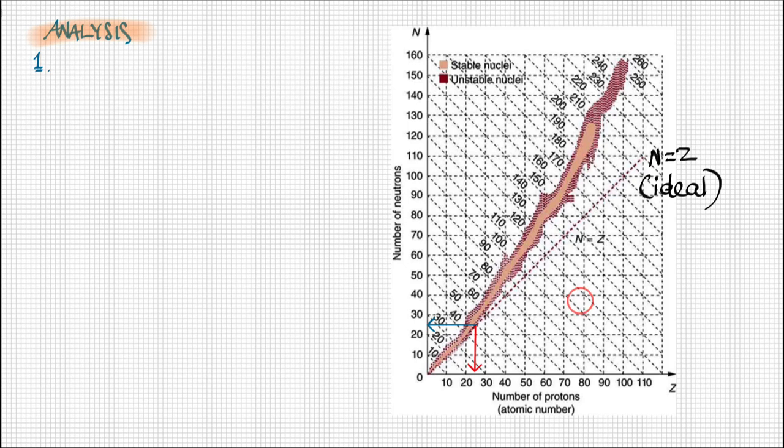We're looking here at a proton number of 25 and a neutron number of 25, so equal numbers of protons and neutrons. We can explain this, we analyze it, and we can explain it in terms of our understanding of the strong nuclear force.